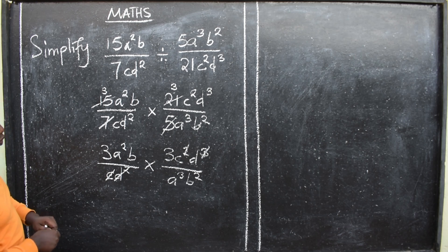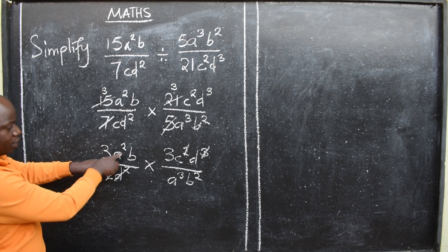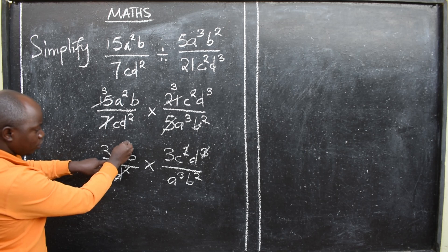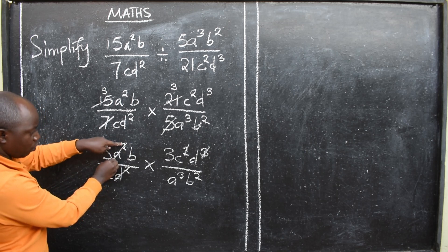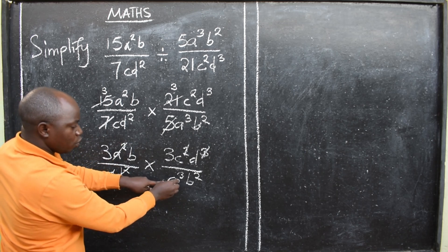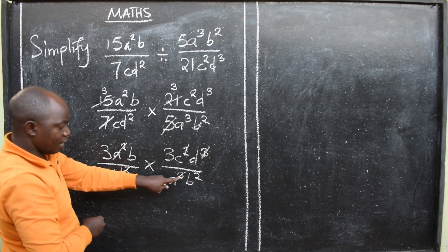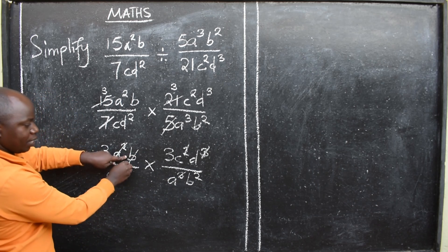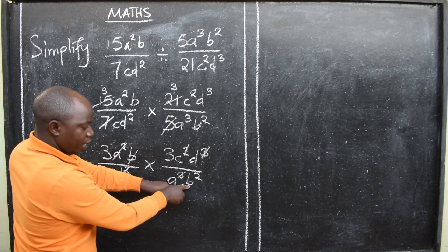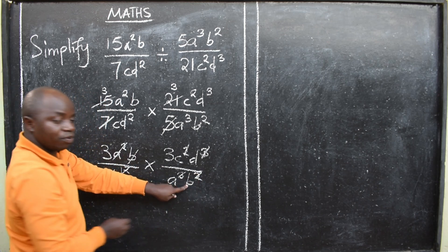Then let me come to the a's. I have a². I'll cancel 2 here. I'll cancel 2 here. I'll remain with 1. There are 3. We come to b. I'll cancel b here. There are 2 here. I'll cancel 1. I'll remain with 1.